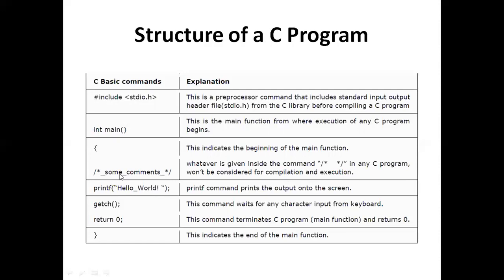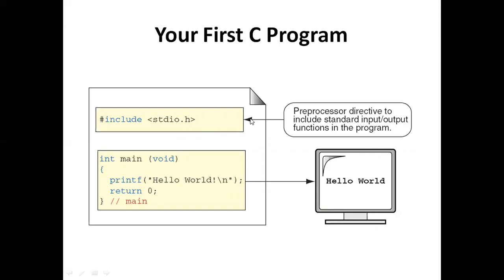Inside the main block, we write comments for the developer's purpose. Comments are ignored by the compiler — they are only useful for developers to note what purpose a statement or project section serves. After comments, we have the print statement, which is called the output statement. These lines are called statements inside the C program. The block is ended with a closing brace.